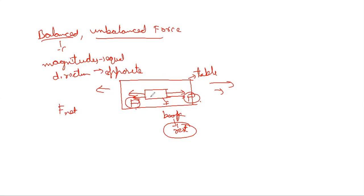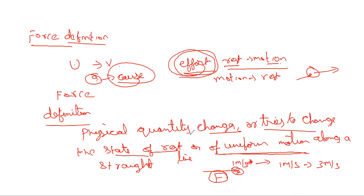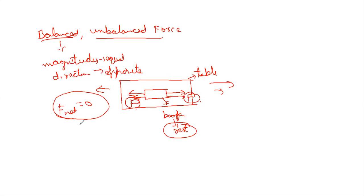If you have equal force in one direction and equal force in the opposite direction, the net force is zero. Now if there is no net force, what does it mean? It means a body which is at rest will remain at rest. That is exactly what is happening here — this body is initially at rest, and since the net force is zero, it will stay at rest. So this is the example for balanced forces.